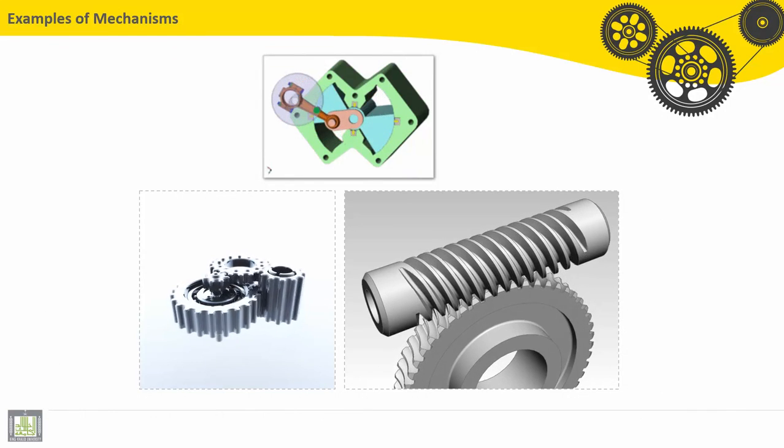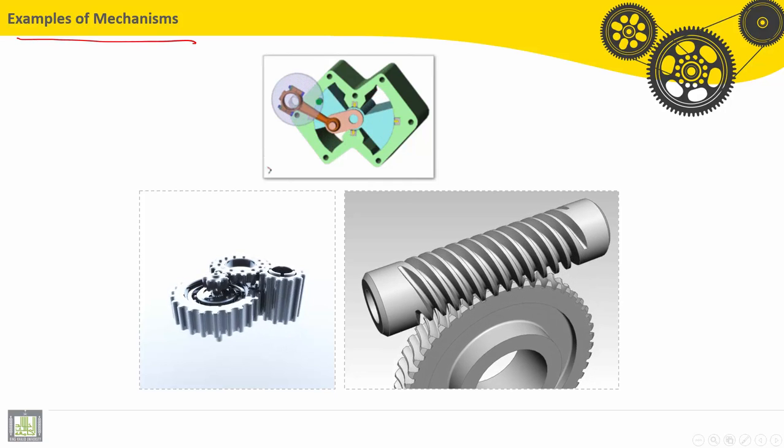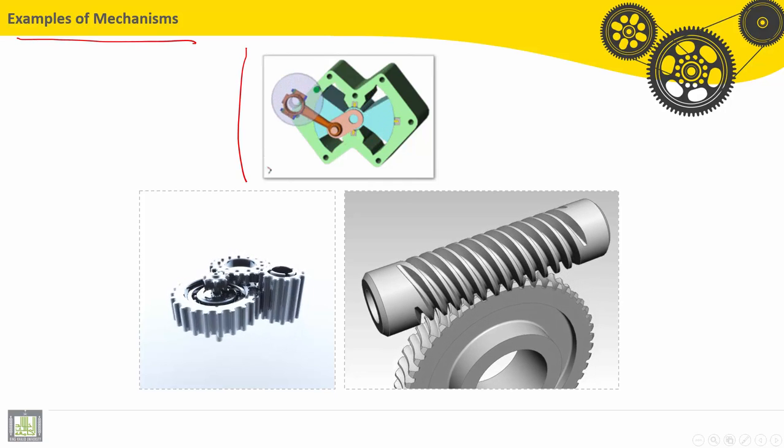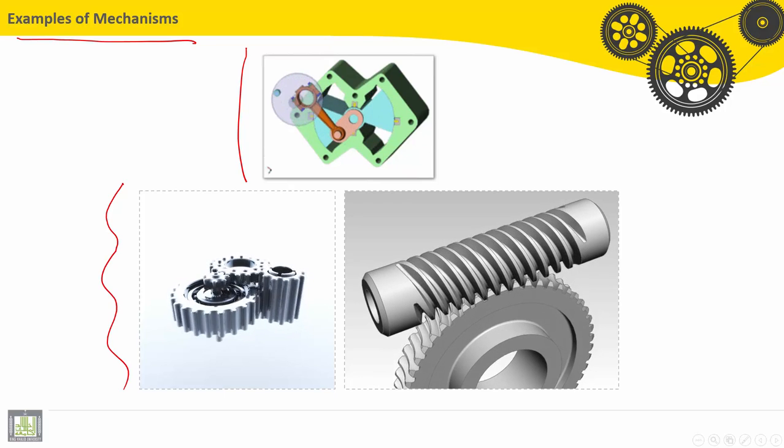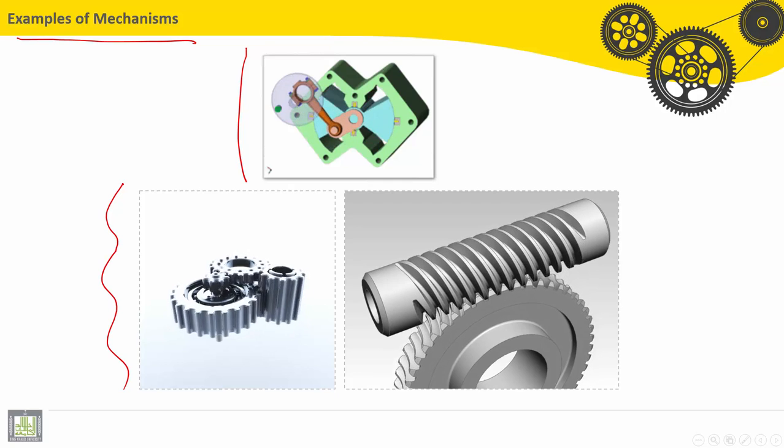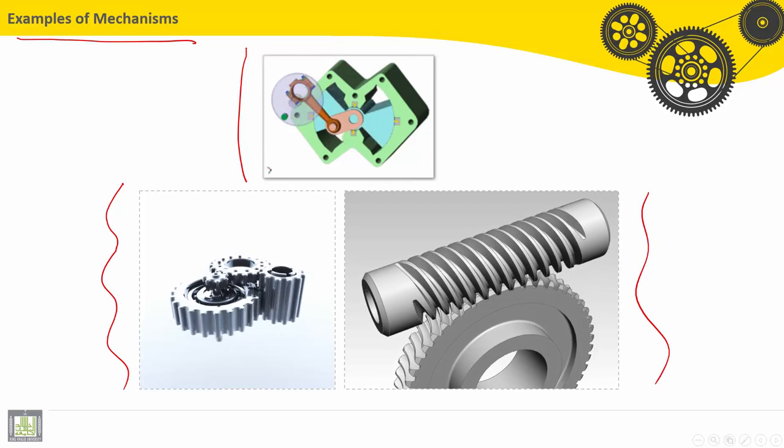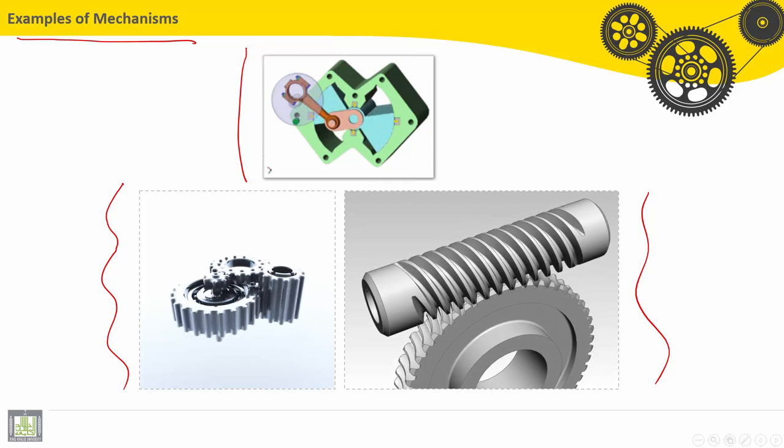We'll continue to present some other examples of mechanisms, and we'll start here by the first example, it is a pump, it is a mechanism. Also here, we have some examples of gears, and here, worm gear. These are mechanisms, or elements of machines.